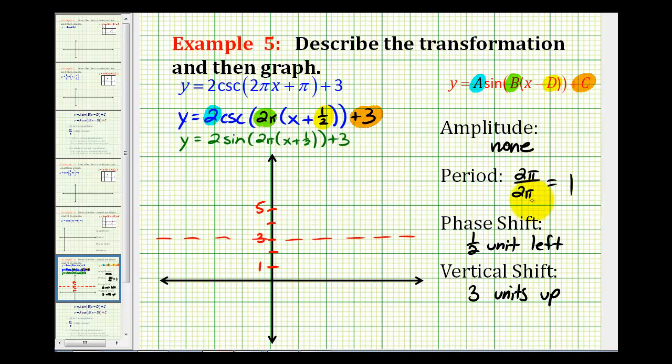And then the period would be one unit, so we normally would graph this from zero to one. But since we have a phase shift of one half unit to the left, we'll actually start this graph at negative one half, and end it at positive one half, because of our phase shift.